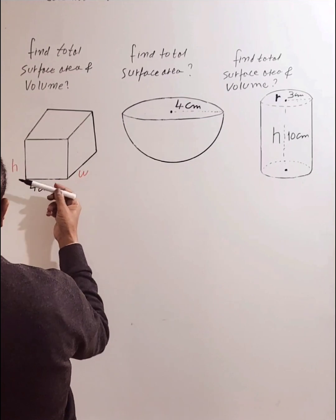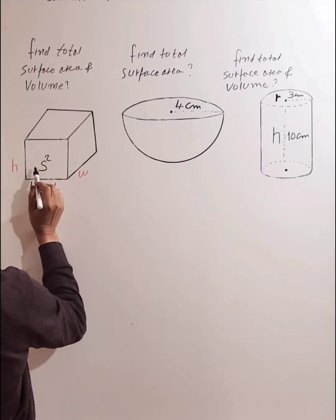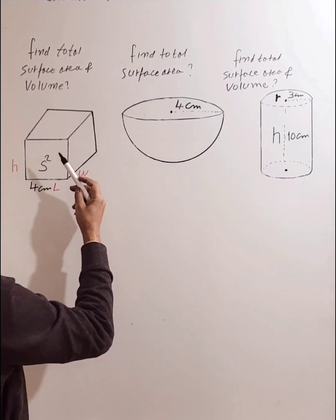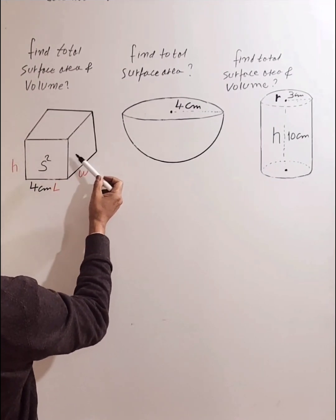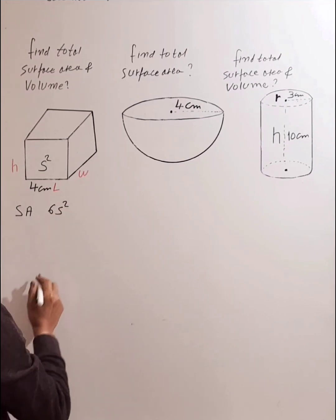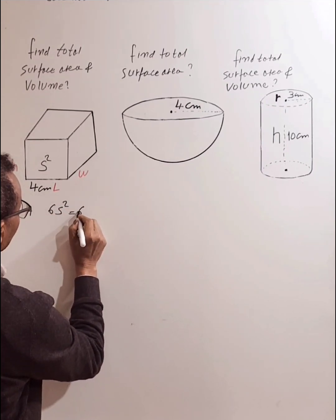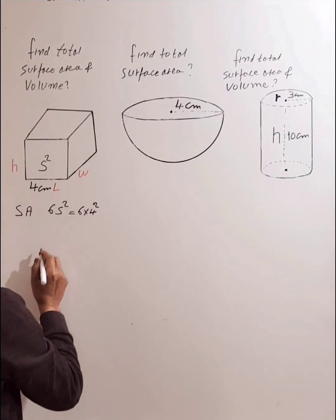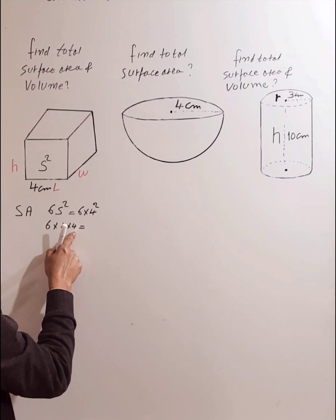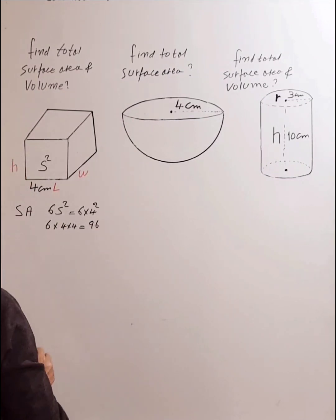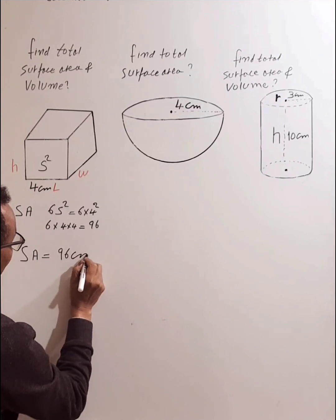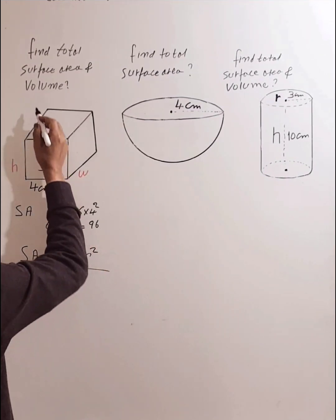The area of one square face is s², where s stands for side length. Since a cube has six equal square faces, the total surface area equals 6 × s². With s = 4, that's 6 × 4² = 6 × 16 = 96. So the total surface area of the cube is 96 cm².